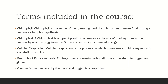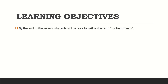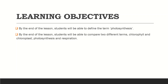The learning objectives for the whole course are as follows. By the end of the lesson, students will be able to define the term photosynthesis. By the end of the lesson, students will be able to compare two different terms: chlorophyll and chloroplast.